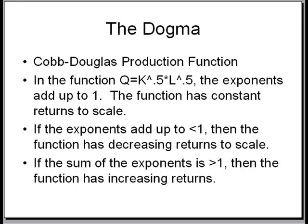The Cobb-Douglas production function is often used in economics. Take the function Q equals K raised to the power of 0.5 times L raised to the power of 0.5, or the square root of K times L. Here the exponents add up to 1. This function has constant returns to scale.